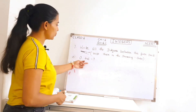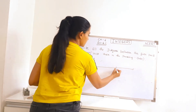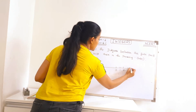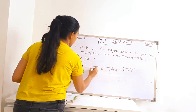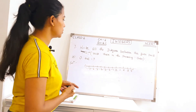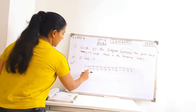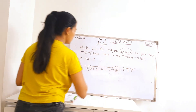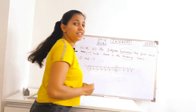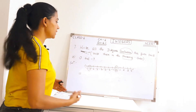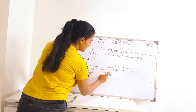Part A is given: 0 and minus 7. First of all, as we know in this chapter, we need to draw a number line — positive integers on the right side and negative integers on the left side. We need to check which integers come between 0 and minus 7. Minus 7 is here and 0 is here. We need to write them in increasing order. As we move to the right side of the number line, the integers are increasing.